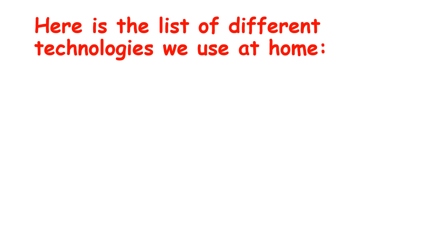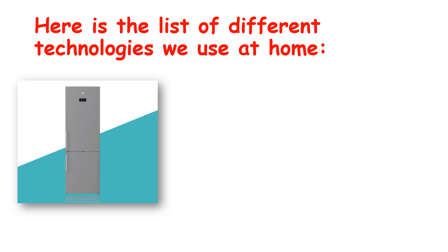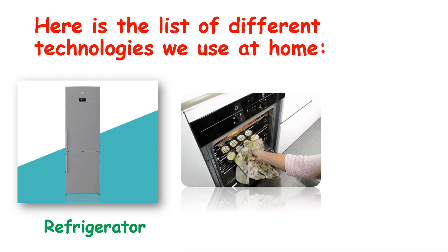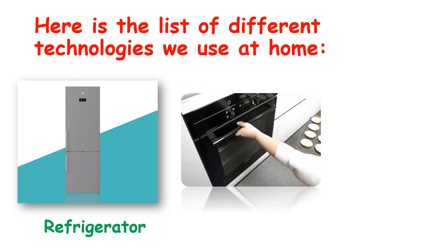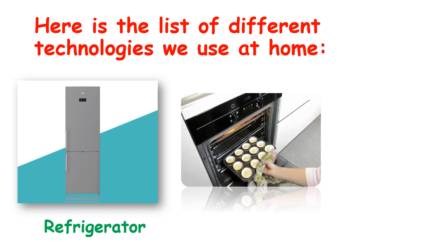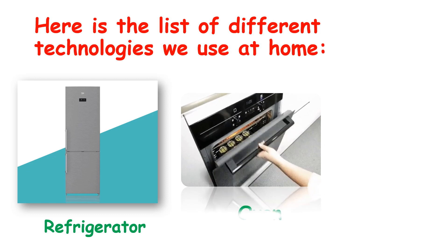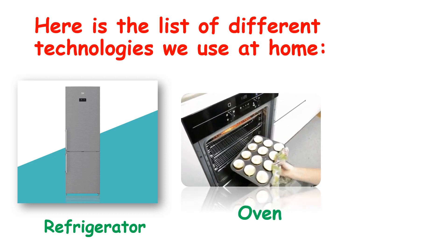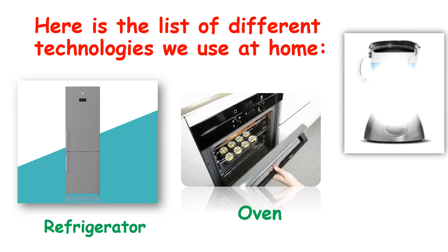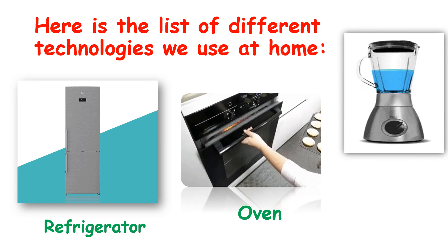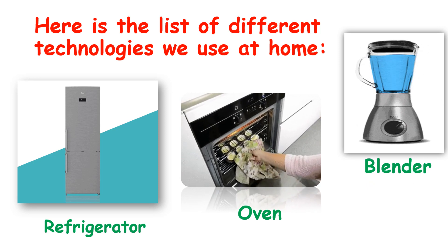Here is the list of technologies we use at home. What is this children? It is a refrigerator or fridge. Refrigerators store food for many days without spoiling them. And what is this — do you have one like this at home? It is an oven. We can heat or cook food quickly in an oven. And this is a blender — with the blender we can crush things in a short time.